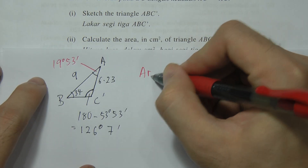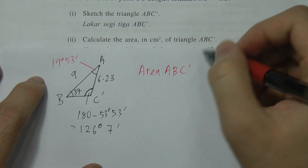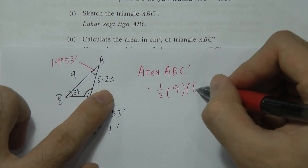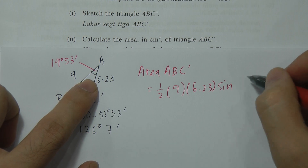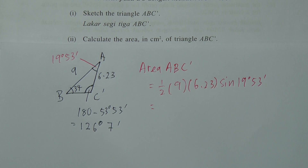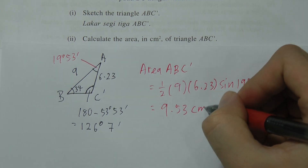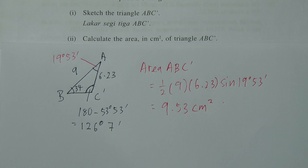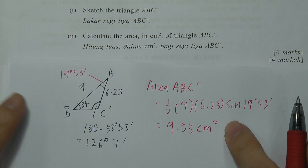Now to calculate the area of triangle ABC'. Using the area formula with two sides and the included angle: Area = ½ × AB × AC × sin(angle between) = ½ × 9 × 6.23 × sin(19°53'). Pressing the calculator, the area equals 9.53 cm². Let me verify: ½ × 9 × 6.23 × sin(19°53') — yes, the answer is confirmed as 9.53 cm².